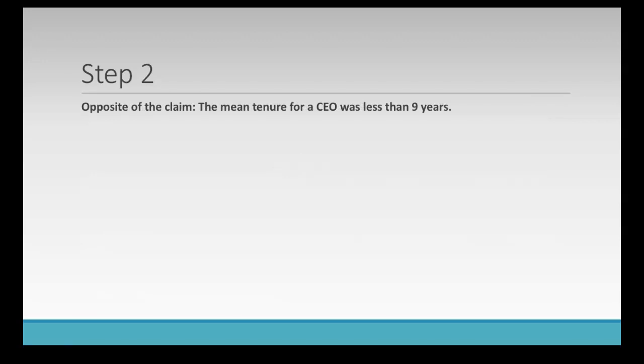Step two is the opposite of the claim. The opposite is that the mean tenure for a CEO was less than nine years. So we write that as mu is less than nine.